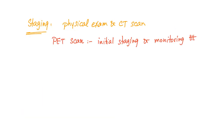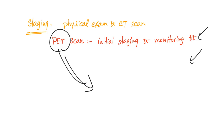For staging of Hodgkin's, you need a physical exam and a CT scan. PET scan can help for initial staging and monitoring treatment. You give the treatment, repeat the PET scan, give treatment, repeat the PET scan — you should see the tumor shrinking by the signs of decreased glucose consumption.